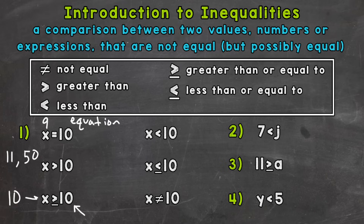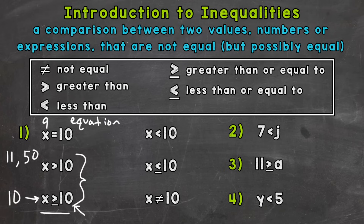So 10 would work for this because 10 is greater than or equal to 10. When we talked about the possibility of the values being equal — when we have that 'or equal to' — we can have an equal solution to the given value. To recap: for both of these inequalities, any number greater than 10 is a correct solution, but they differ because the bottom one includes 10 since we have x is greater than or equal to 10.